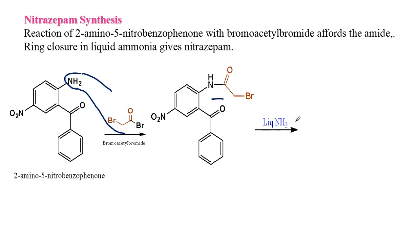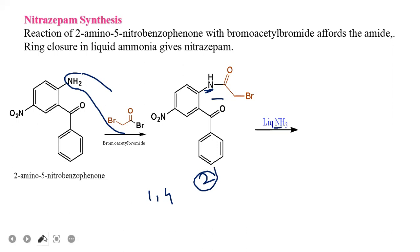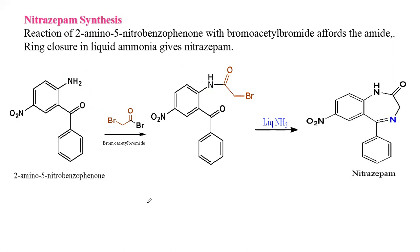Structure 2 is then reacted with liquid ammonia, because our target is to synthesize the benzodiazepine pharmacophore. In benzodiazepine, there are nitrogen heteroatoms at positions 1 and 4. In Structure 2, one nitrogen is already present, so we need to introduce a second nitrogen — that second nitrogen comes from liquid ammonia.